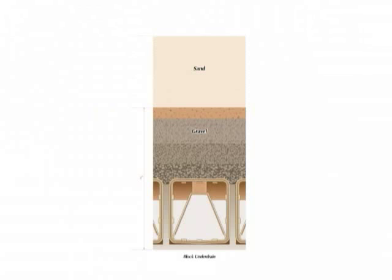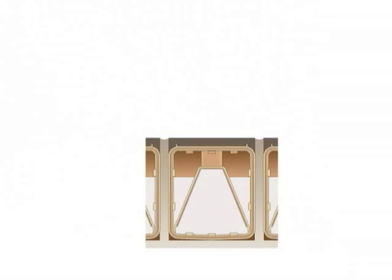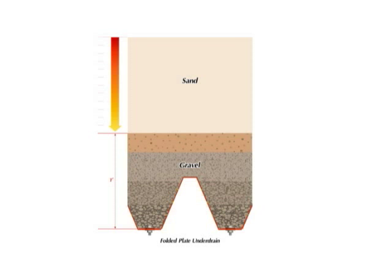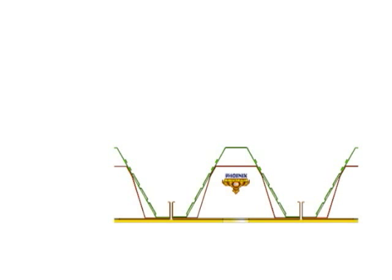Block systems with support gravel can only filter to within two feet of the filter floor. Plastic block systems with a plastic media barrier manage filtration to within one foot of the filter floor. Folded plate under drain systems often require support gravel and filtration also stops about one foot from the floor.